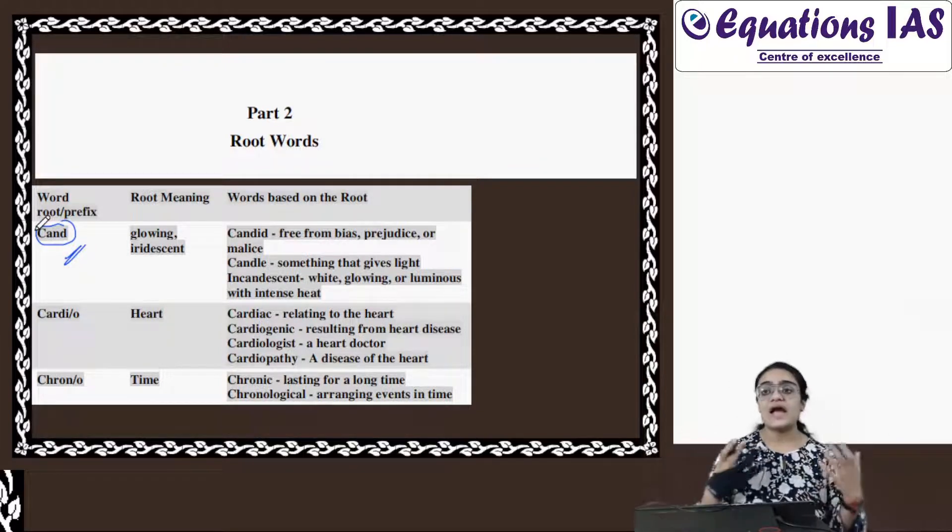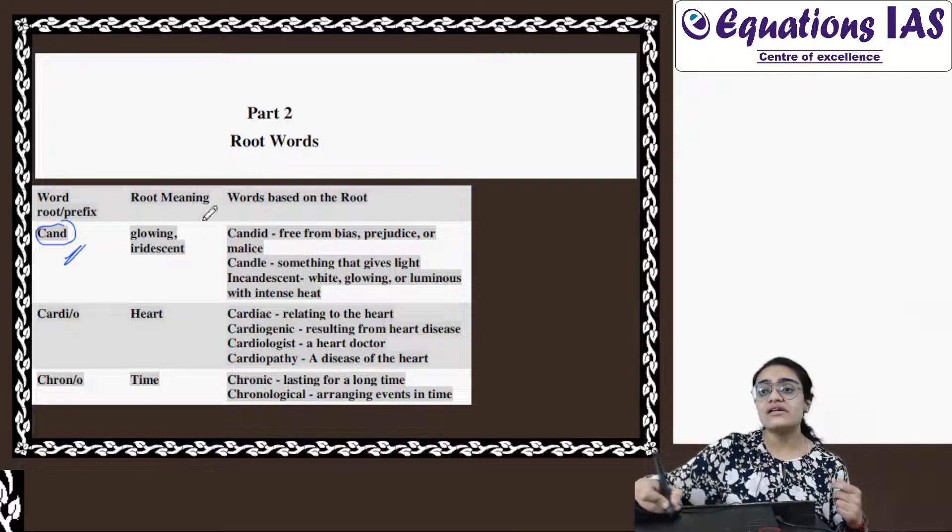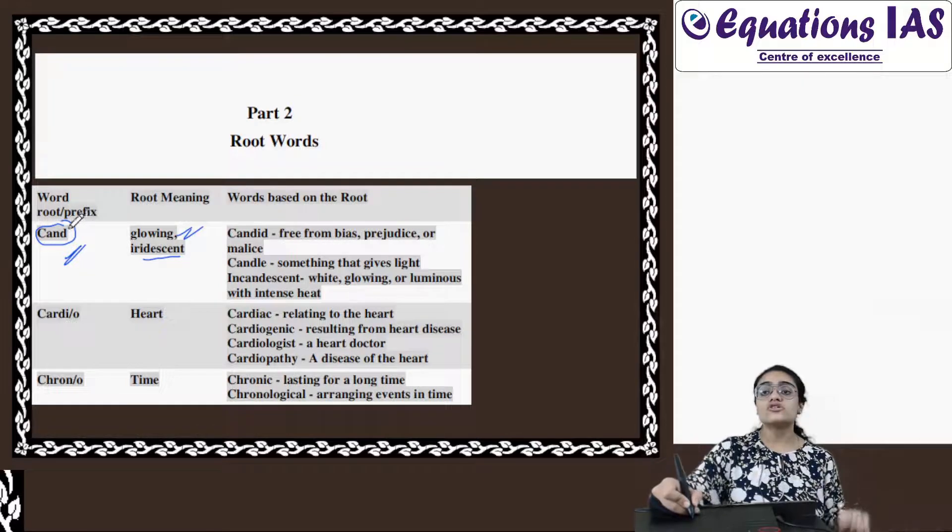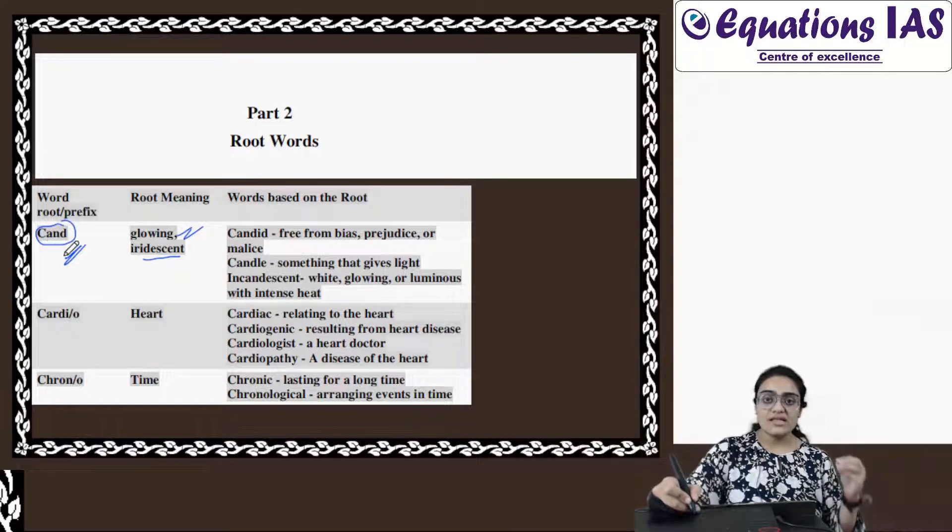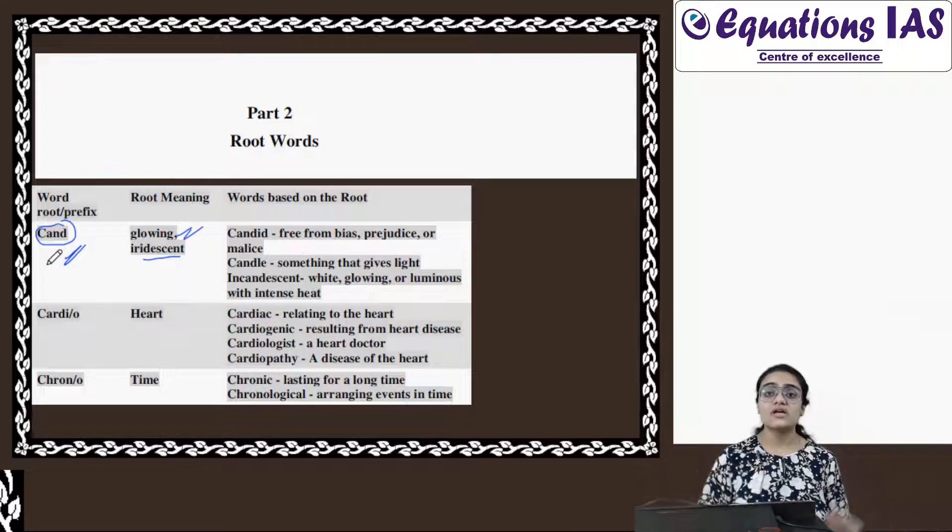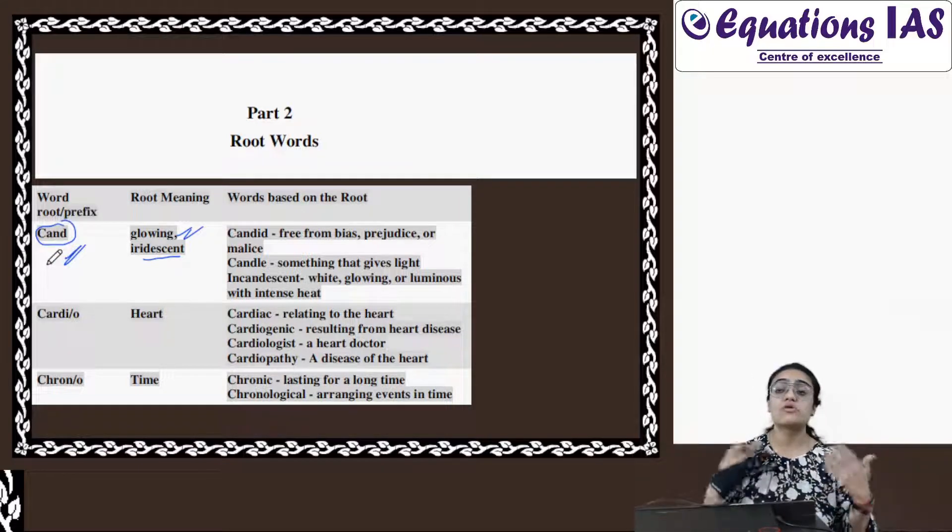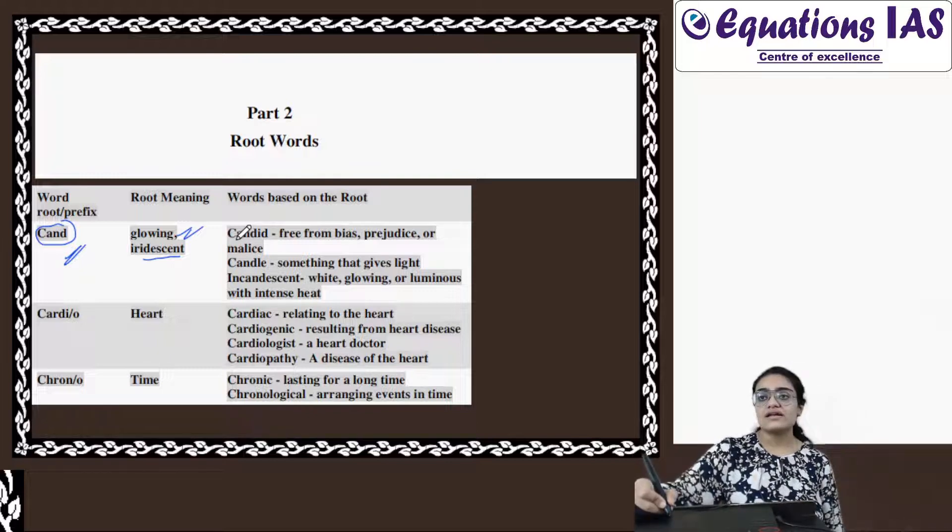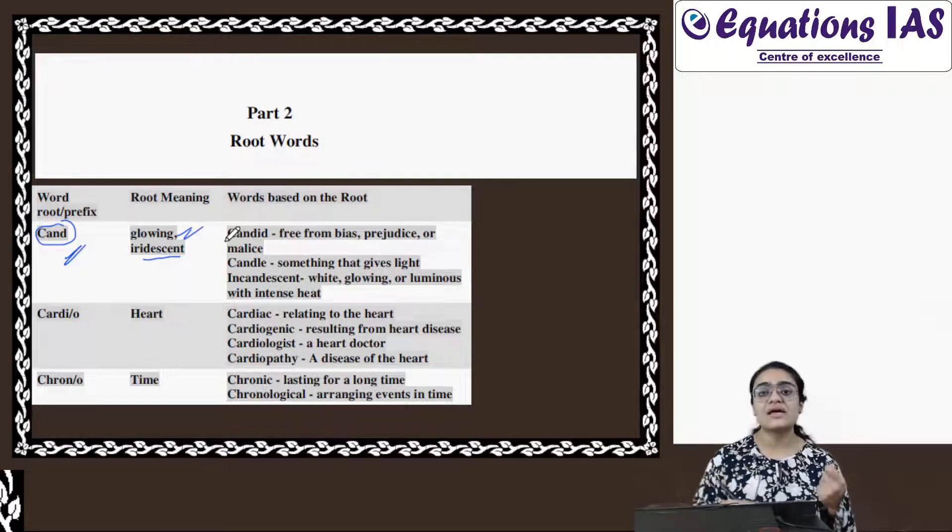Something that is unplanned, something which is iridescent means that there is glowing or shining. So the Cand word, either they are related to something unplanned or they are related to something which is very candid. Candid means glowing, right? First word is Candid.